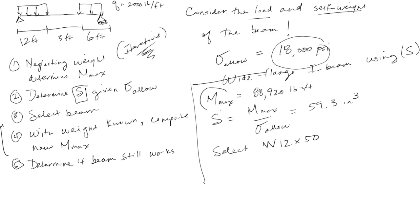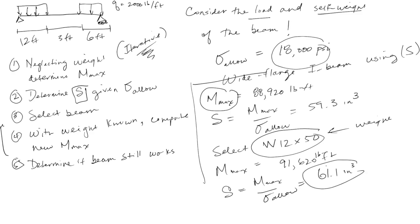Now we have to redo the m max calculation because this has weight. So we redo m max and we get a new m max equal to 91,620 pound feet. So you can see it's not a huge change. And if you compute S now from that new m max over sigma allowable, it requires a slightly larger section modulus. But you'll notice that this still works for this S. Because the S that we picked, this guy here, the S is I believe 64.2 inches cubed. So that's the S. So it's actually more massive than theoretically required, but you get them usually in standard manufactured shapes. So as long as we're less than 64.2 after adding the weight, we're good.